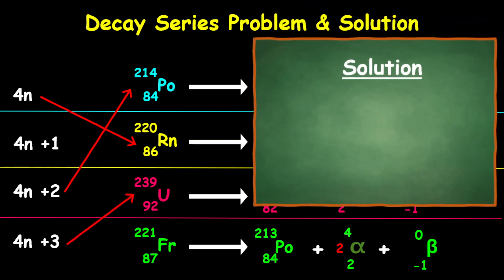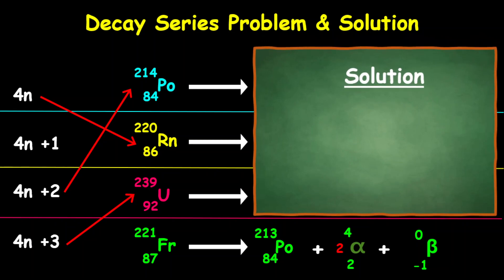Now for the last one, there's no need for working out anything, but we want to prove if we're actually correct because it's the last one remaining anyway. So if we divide 213 by 4, what we get is 53.25, which means 53 and one remainder. So therefore, definitely, that is a 4n plus 1 series.